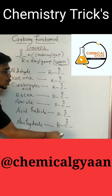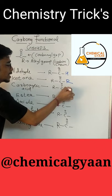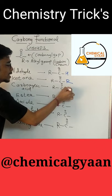For aldehyde, write H. For ketone, write R. For carboxylic acid, write OH. For ester, write OR. For amide, write NH₂. And for acid halide, write X. Answer this question in the comment section.